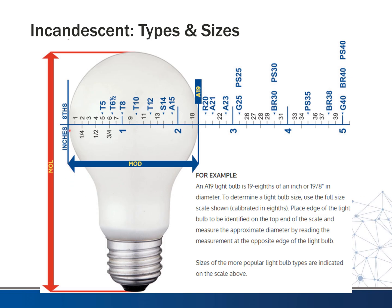The second number has to do with the diameter of the bulb in eighths of an inch. For instance, the common A19 bulb — the most common bulb used in residential applications — has an A shape and 19 means 19 eighths of an inch. You can have an A21 bulb, which is much larger. When you get to fluorescents, you'll see T8s, T5s — anytime you see a number with a light bulb part number, it's usually describing the largest diameter in eighths of an inch. A BR38 or PS30 follow the same convention.